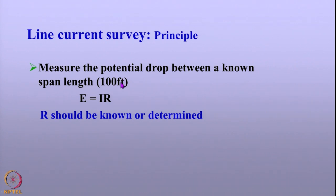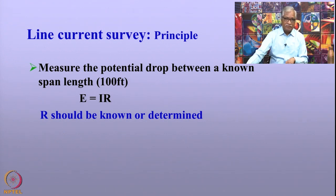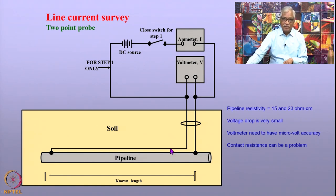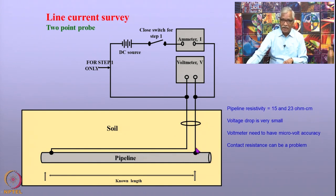Typically about 100 feet of pipeline is selected for measuring pipeline current. There are two types of line current survey techniques. The first is the two-point probe, which is relatively simple. It involves measuring the potential across a known segment of the pipeline length using a millivolt meter to measure the potential drop caused by current flow. If the resistivity is known, the current flowing in the pipeline can be determined.